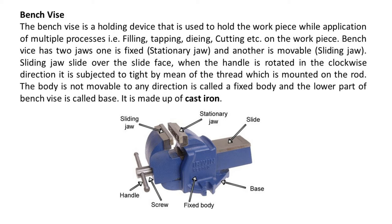Bench vise has two jaws: one is a fixed stationary jaw, and another is a movable sliding jaw. The sliding jaw slides over the slide face. When the handle is rotated in the clockwise direction, it is tightened by means of a thread mounted on the rod. The fixed body is not movable in any direction, and the lower part of the bench vise is called the base. It is made up of cast iron.